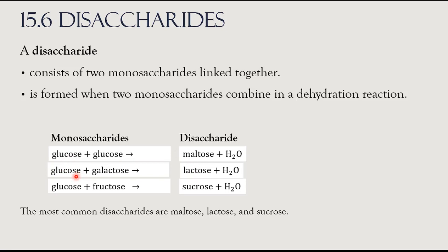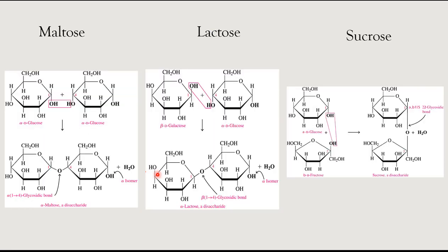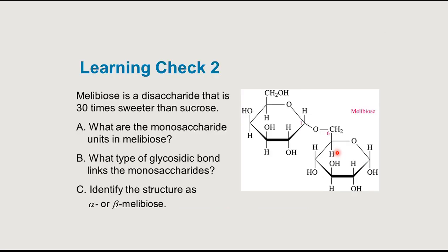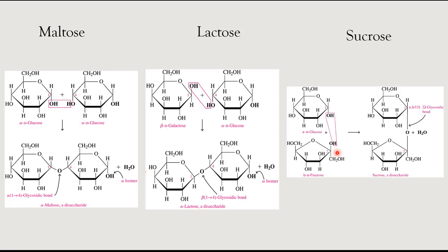Other examples of disaccharides: glucose + glucose gives maltose; glucose + galactose gives lactose; glucose + fructose gives sucrose. These are our most common dietary disaccharides. Visually, notice that all glycosidic linkages occur between carbon 1 of glucose — the hemiacetal or anomeric carbon — and a hydroxyl off of the second sugar. For many it's carbon 4, but with sucrose it's carbon 2, which also happens to be the anomeric carbon of fructose.